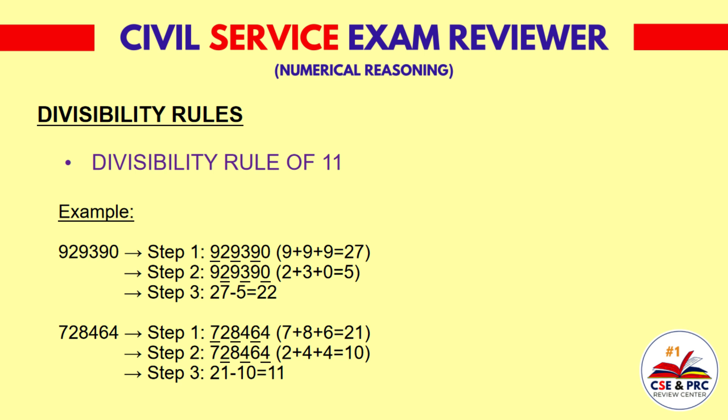Another example, 929,390. Step 1: 9+9+9 equals 27. Step 2: 2+3+0 equals 5. Step 3: 27 minus 5 equals 22, which is a multiple of 11. Another example, 728,464. Step 1: 7+8+6 equals 21. Step 2: 2+4+4 equals 10. Step 3: 21 minus 10 equals 11, which is a multiple of 11.